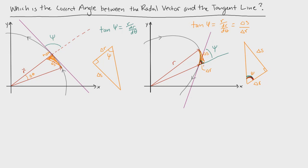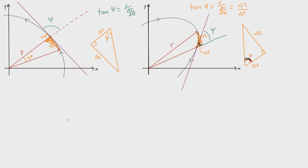What that means is that the rotational direction of the particle does not affect the angle it makes with the tangent line and the radius. Whether the particle is going this way or that way, the angle itself is always going to be the same angle. Now we're going to look at whether the angle changes if the curve changes concavity.